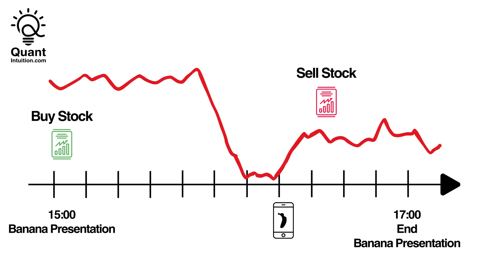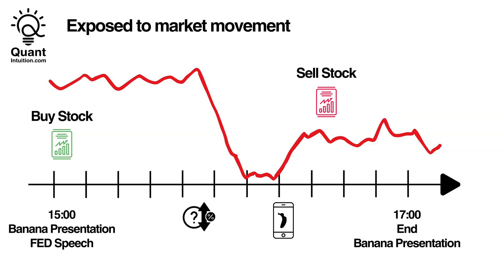Over the next hour, the stock price plummets, but then finally the phone is revealed and the stock price experiences a small jump. At the end of the day, while your prediction about the phone was correct, you actually still experienced an overall loss on your trade. Investigation reveals that the entire market experienced a downturn during the early part of the presentation, stemming from an unexpected announcement by the Federal Reserve about significantly raising interest rates. The entire US stock market reacted negatively to this news, and the BananaPhone company's stock price followed as well.